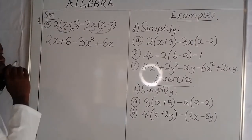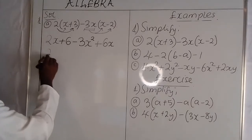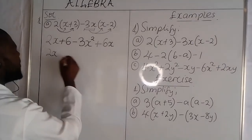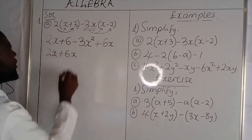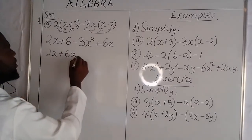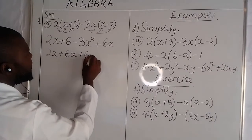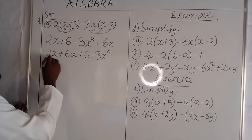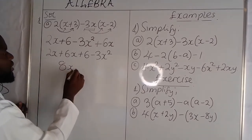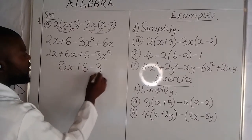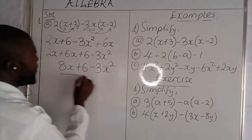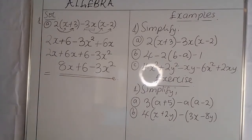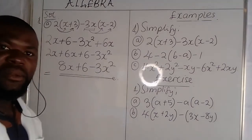Once you reach here, all you need to do is collect like terms. So we have 2x, and we bring together the terms with the same variables. Then we have plus 6, then we have minus 3x squared. Once we reach this state, there is nothing more we can do — we can't go any further. So this is our answer; we just end there.